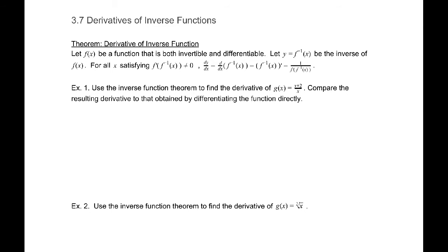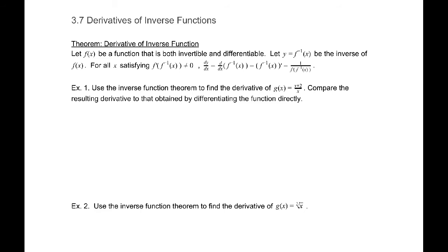Section 3.7: Derivatives of Inverse Functions. We have a theorem for the derivative of the inverse function. If f(x) is a function that is both invertible and differentiable, and we let y equal f inverse of x be the inverse of f(x), then for all x satisfying f prime of f inverse of x not equal to zero, the derivative of the inverse function is 1 over f prime of f inverse of x.